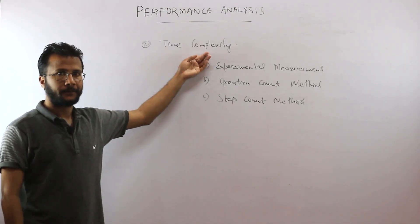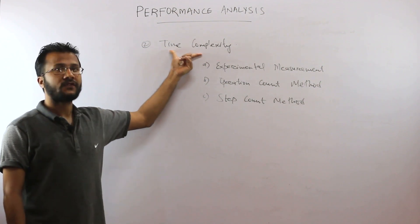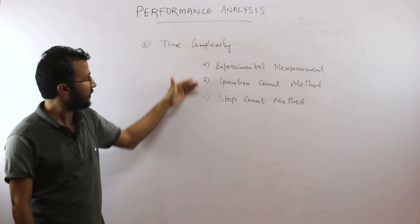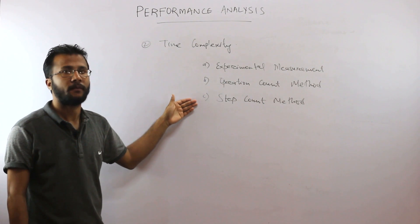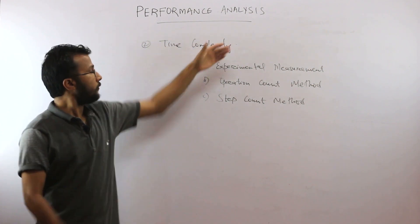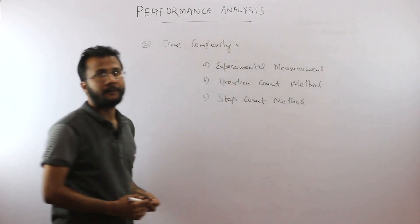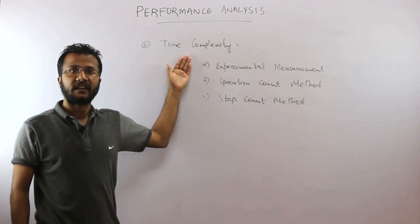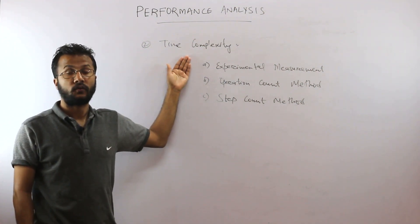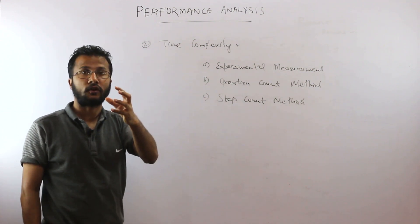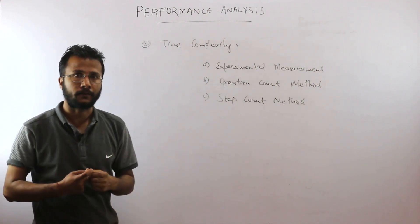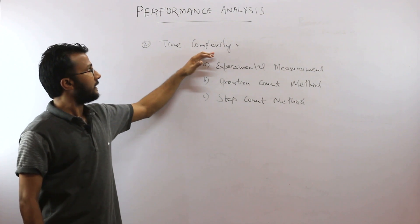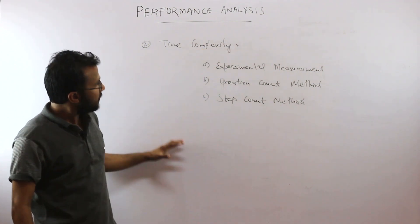Time complexity is the amount of time required for complete execution of the program, and it is a function of the input instance. We are interested to see how the time complexity of an algorithm grows if the input size grows, or how it comes down if the input size shrinks. There are three different ways we are going to learn for estimating time complexity.